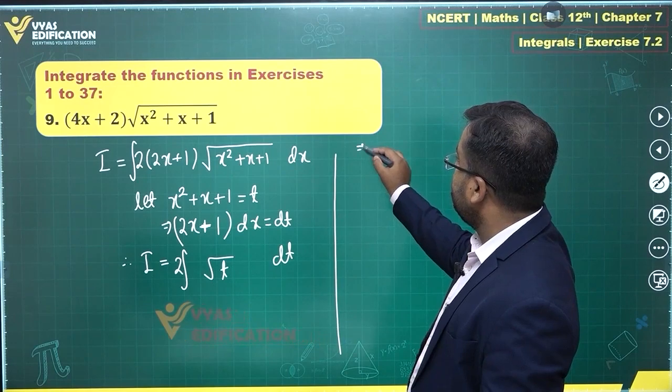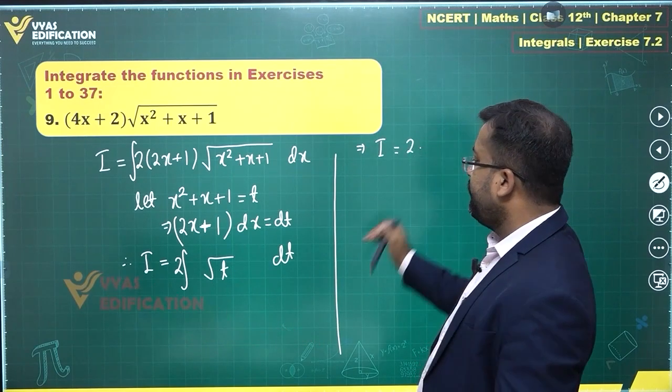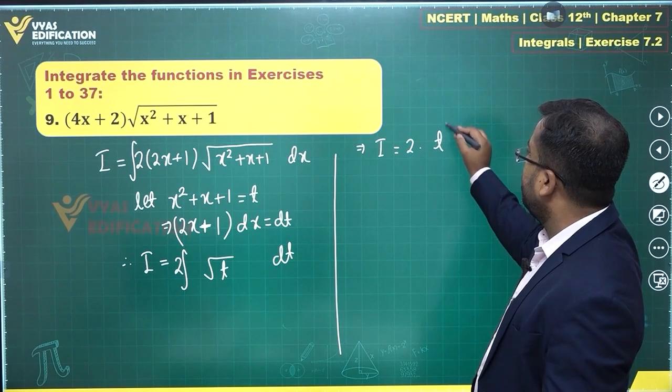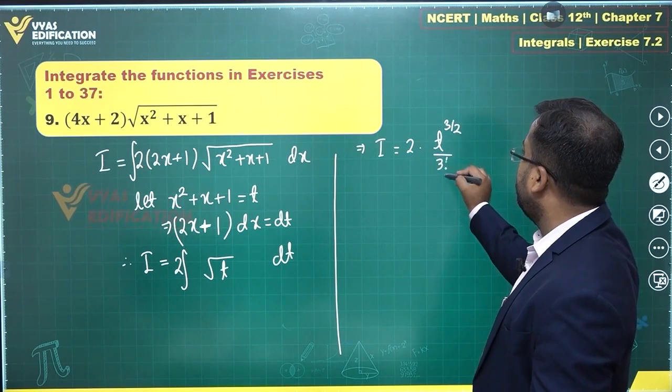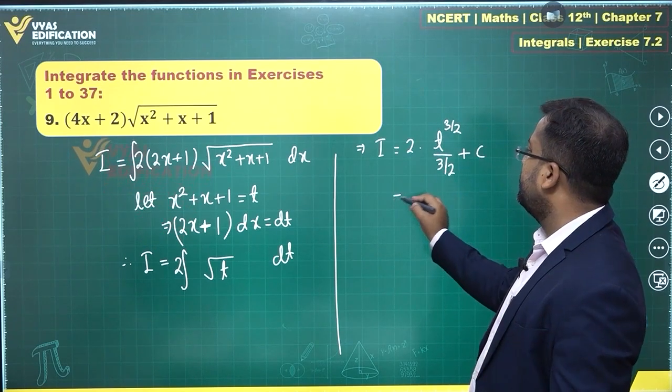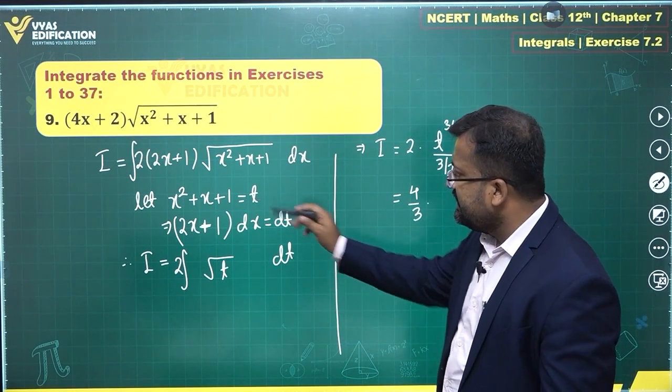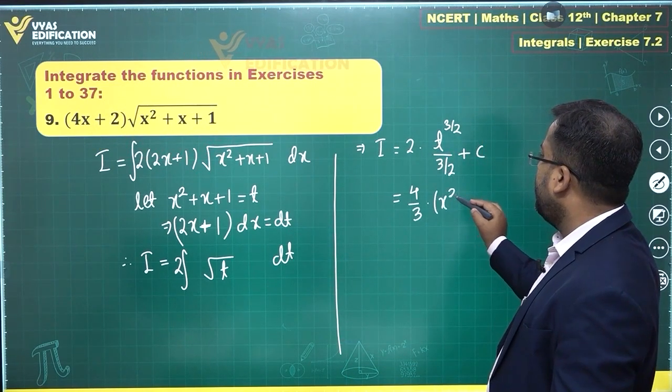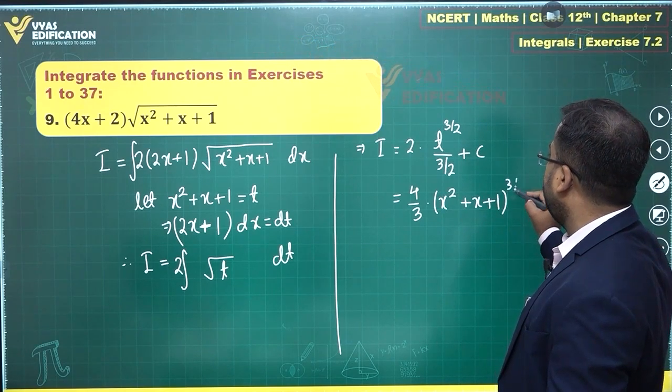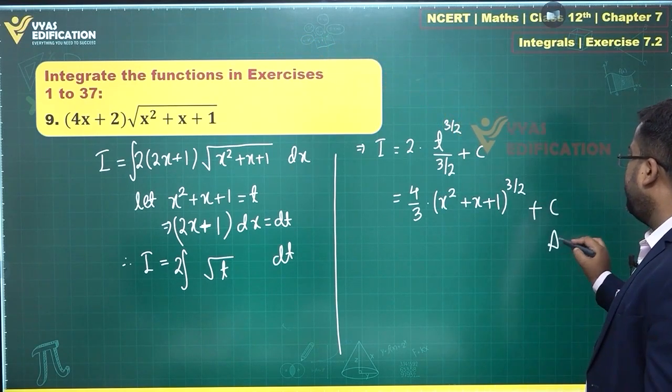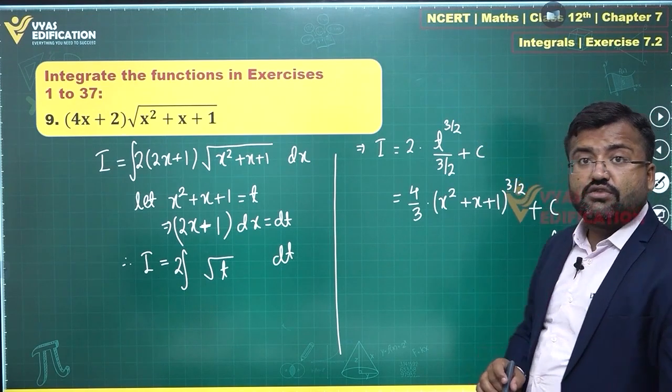Which gives me i is equal to 2. The integral of root t will be t power 3 by 2 upon 3 by 2 plus constant of integration. This is 4 by 3 times t power 3 by 2. Now, t is this x square plus x plus 1 power 3 by 2 plus the constant of integration and that's the required answer for this question.